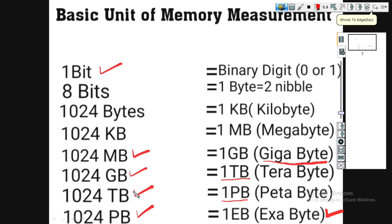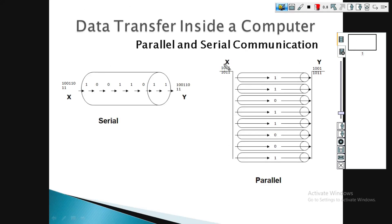Memory units continue: KB, MB, gigabytes, terabytes, petabytes, exabytes, and so on — they keep increasing. We also have data communication between computers. There is parallel communication and serial communication.